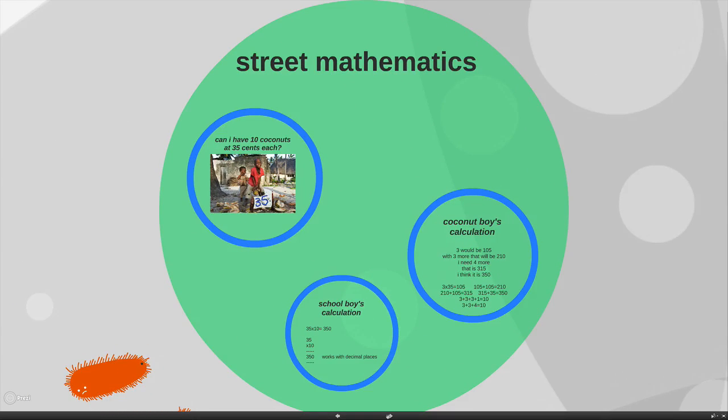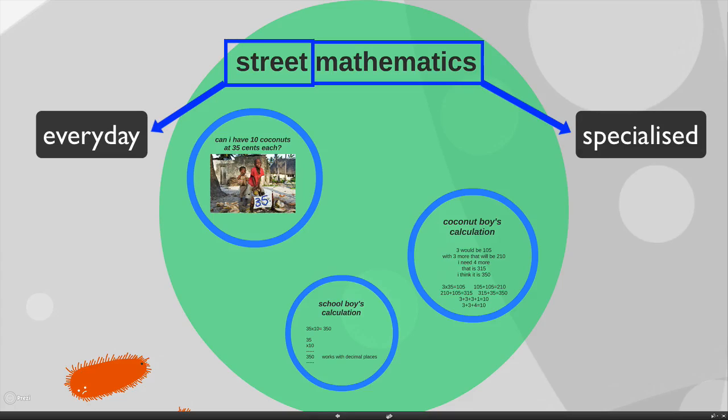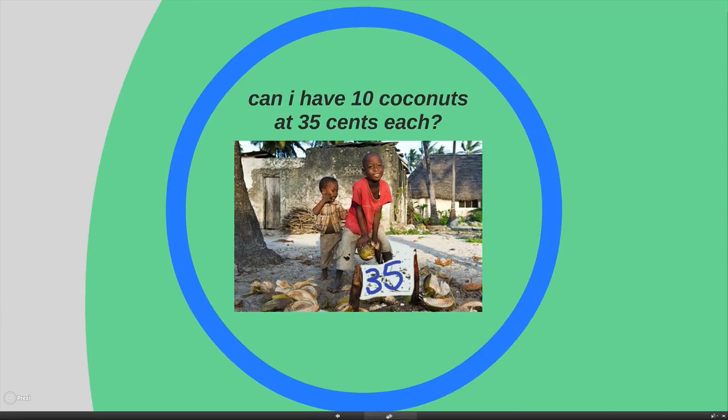The one I want to start off with is street mathematics. You should immediately get a clue when you hear the term street mathematics. It sounds like you're combining the everyday world of the street with the formal world of mathematics. This has become a very famous argument within maths, and I'd like to give a flavor of it. In this instance, this happened in Brazil, and a woman went up to a coconut boy who was selling coconuts.